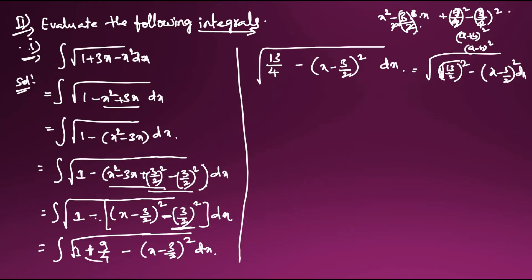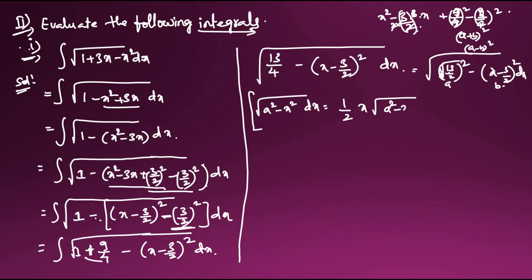The formula is: integral √(a² - x²) dx = (1/2)·x·√(a² - x²) + (a²/2)·sin⁻¹(x/a) + C. Here a = √13/2 and x is replaced by (x - 3/2). We substitute these into the formula.